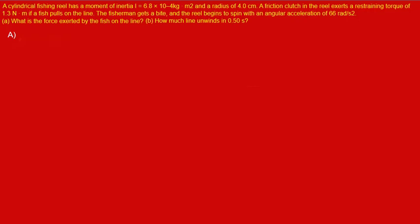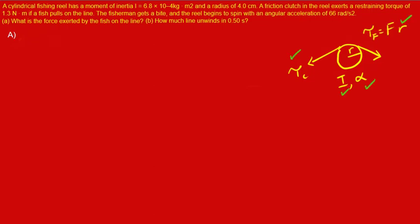To start this problem, we should draw a free-body diagram showing the known and unknown variables as well as all vectors involved. We can express the torque of the fish as the product of the force of the fish times the radius. Next, we put a green checkmark next to everything that's given numerically, and we circle in blue that which we're looking for.